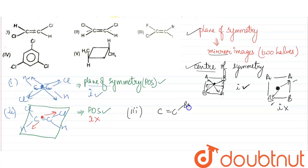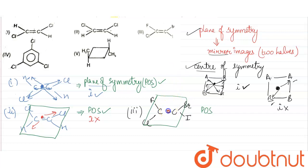Third option: C double bond C — this side Br, other side I, one side F, other side Cl. For plane of symmetry, we always have the molecular plane which divides the whole molecule, so POS is present. For center of symmetry: this side Br, other side Cl; this side I, other side F — these groups are not equal to each other, so center of symmetry is not present. Only POS is present.